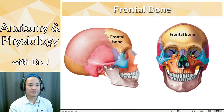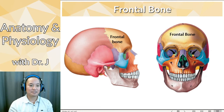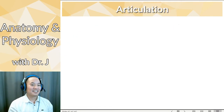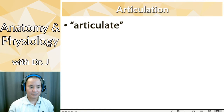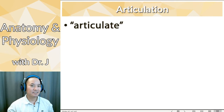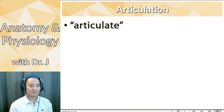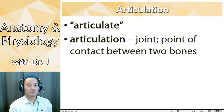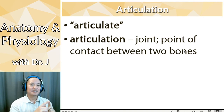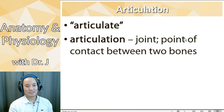The frontal bone — pretty obvious. Where's the frontal bone? It's up front and center. Your forehead, that's your frontal bone. And then articulation — when you hear the term articulate, you probably think of someone who's very well-spoken, very eloquent. But articulation in anatomy refers to some sort of joint. When two bones touch, this is what you call articulation. When a bone articulates with something, that means it is touching another bone.